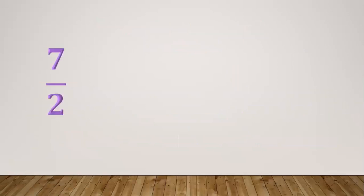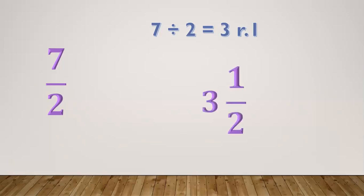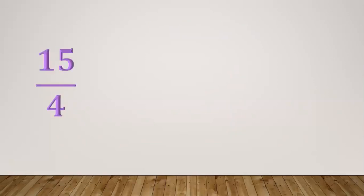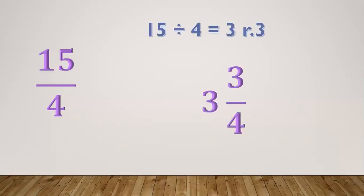Another example: 7/2. Divide 7 by 2 equals 3 remainder 1. So 3 is the whole number, 1 is the numerator, and copy the denominator 2. The mixed number is 3 and 1/2. Another one: 15/4. Divide 15 by 4 equals 3 remainder 3. So 3 is the whole number, 3 is the numerator, and 4 is the denominator. The mixed number is 3 and 3/4.